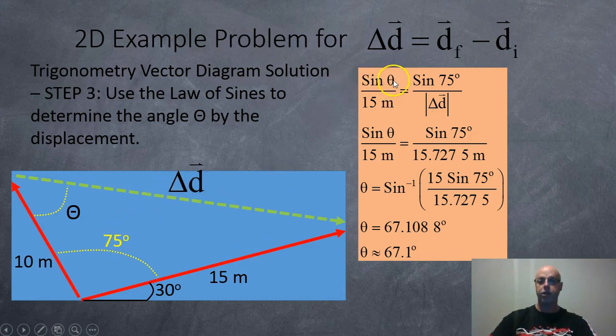Okay, so using the law of sines: sine theta which is across from 15 meters equals sine 75 which is across from the displacement which we just found to be 15.7275 meters. Okay, we just do some algebra manipulation, rearrange our equation here and solve, and we get an angle of around 67.1 degrees, so this angle here is around 67.1.